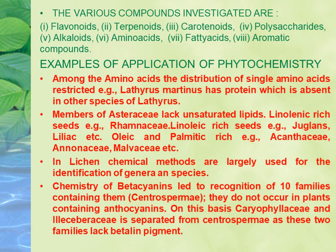Common compounds found in plants include flavonoids, terpenoids, carotenoids, and alkaloids. If a particular flavonoid is found in all plants of a group, it means those plants are related. For example, the amino acid lathyrus is present in only one species and absent in all others. If it is absent in all closely related plants, that means those plants are closely related and the one containing it is an exception.